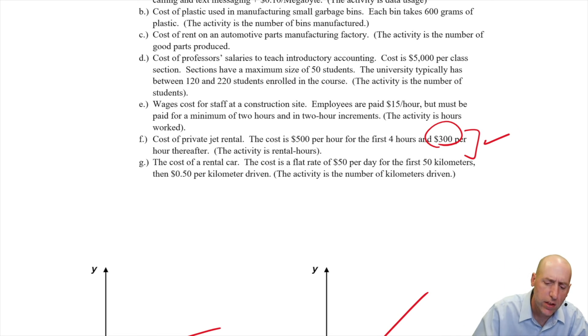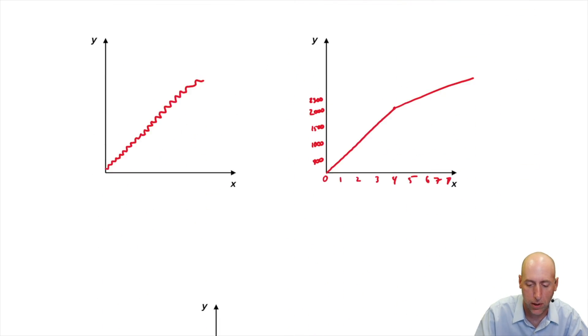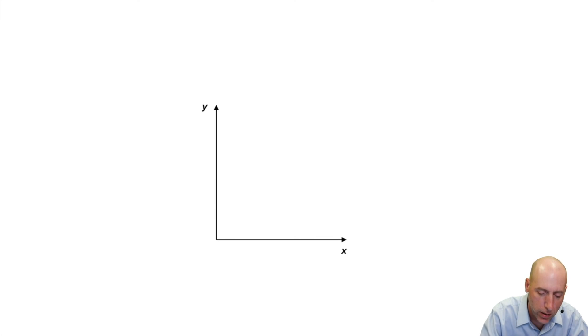Last one. G, cost of a rental car. The cost is a flat rate of $50 per day for the first 50 kilometers, then 50 cents per kilometer driven after that. So we're driving, we pay $50. Once we hit 50 kilometers, it starts to become variable. The cost starts to tick upwards. There we have it.